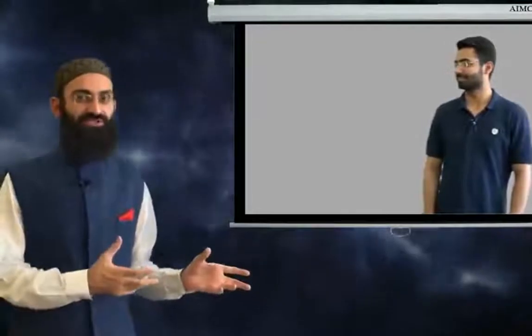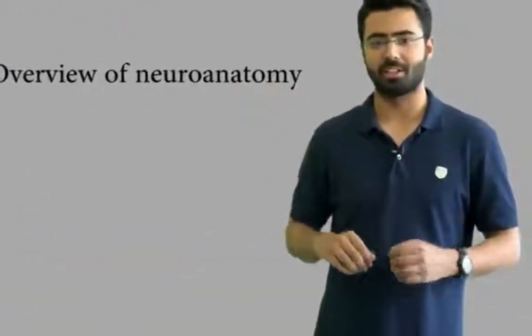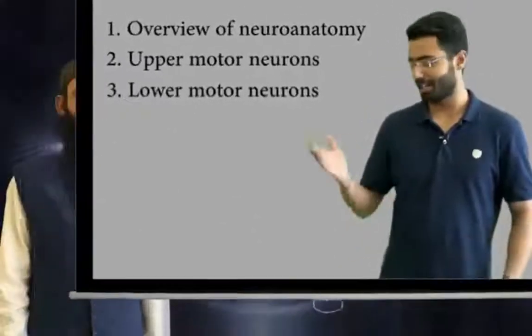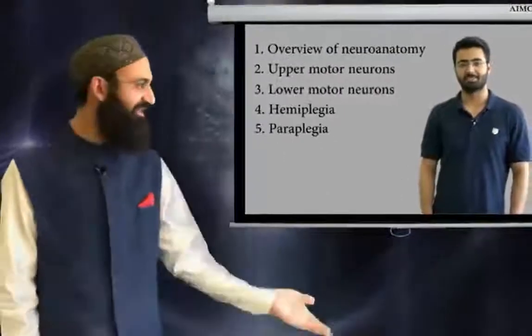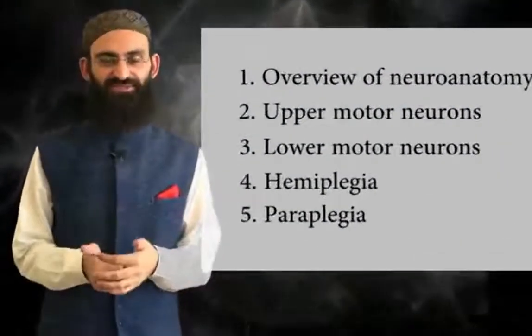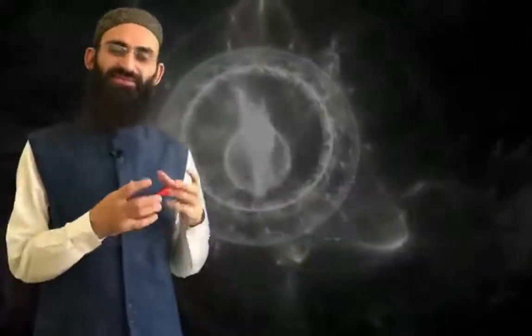Let me introduce Danish, a final year medical student who is going to localize a neurological lesion with my help. In order to localize a neurological lesion, we are going to need a brief overview of neuroanatomy, the concept and differences of upper and lower motor neurons, and the various patterns of motor weakness like hemiplegia and paraplegia. So in this brief video, we will go through these topics and discuss a number of case scenarios. Let us begin with basic neuroanatomy.